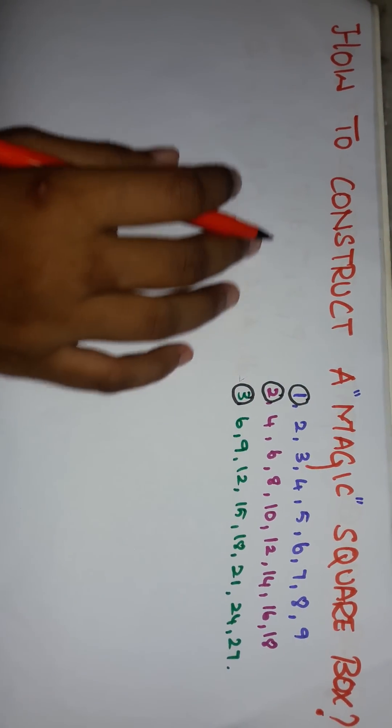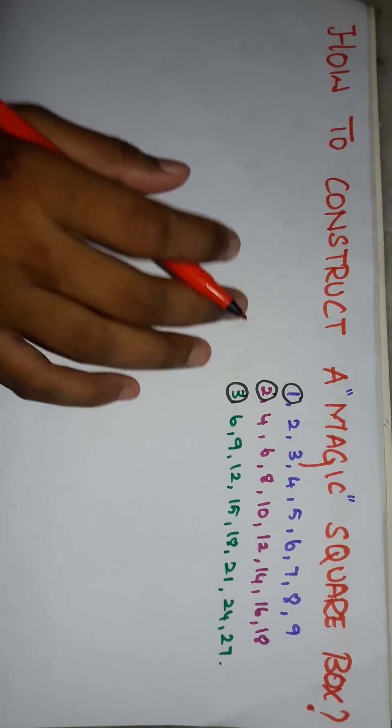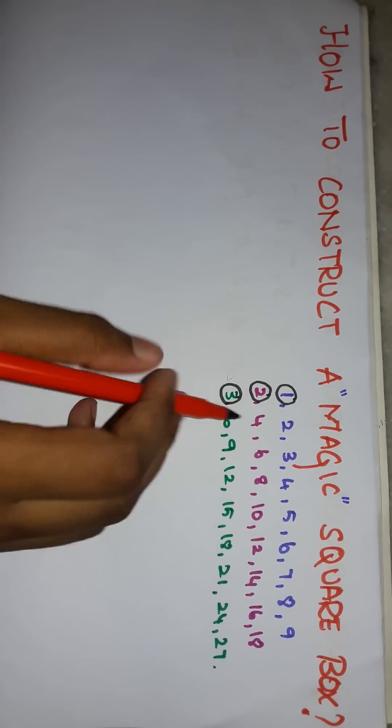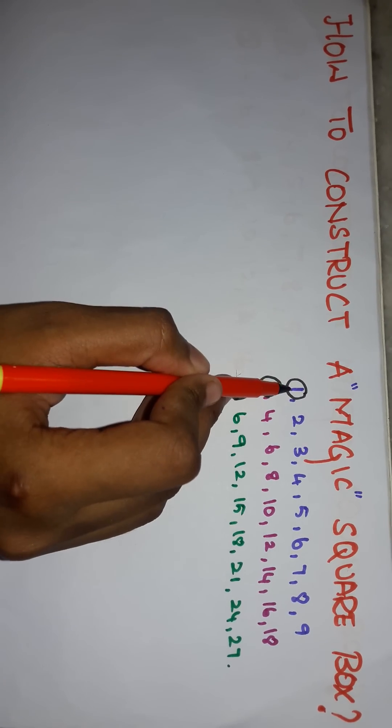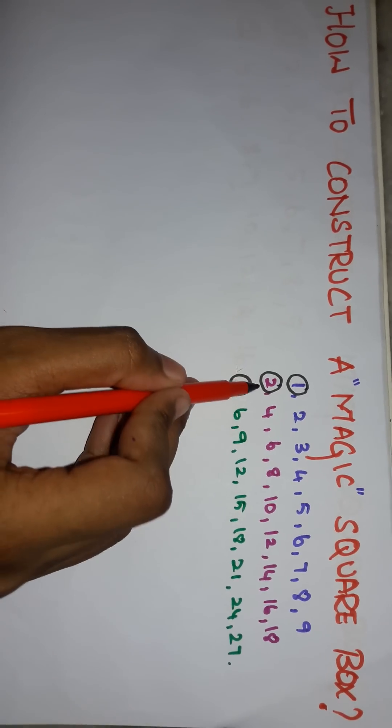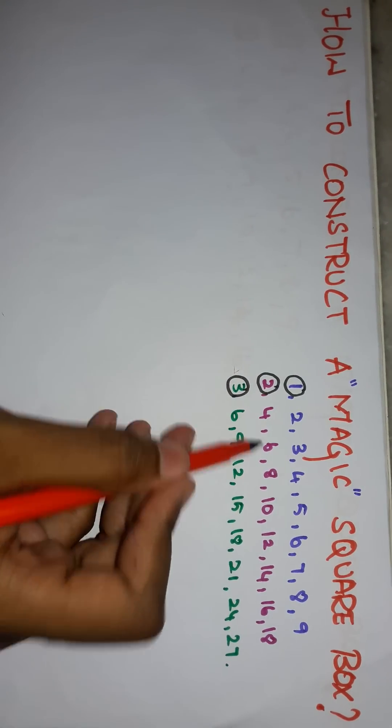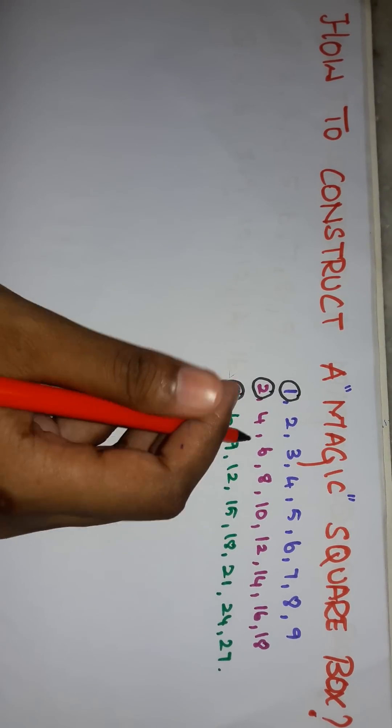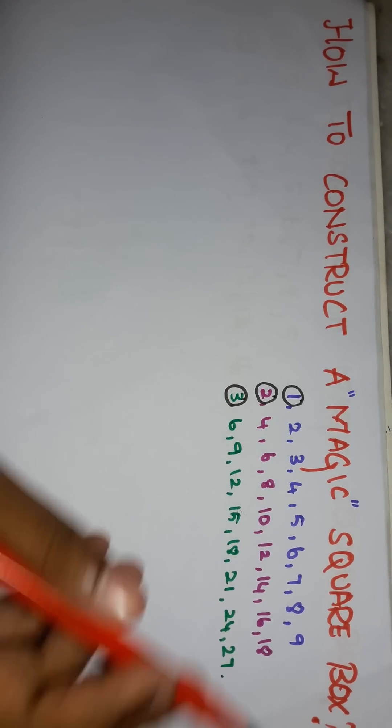I am going to teach about how to construct a magic square box in the easiest and simplest way. First of all, take any number. If I take 1, the other consecutive numbers will be a multiple of 1. If you take 2, the other consecutive numbers will be a multiple of 2. Likewise, you can take any number up to 9.